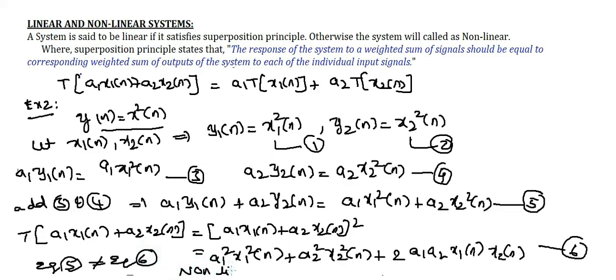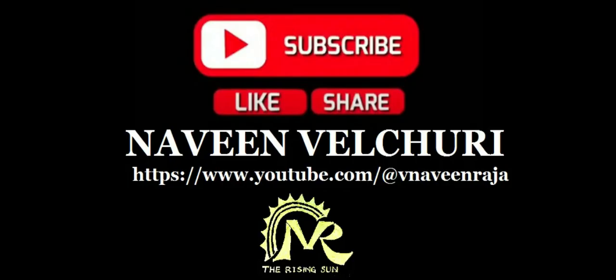In this way, by using the superposition principle, we can decide whether a given system is linear or not.